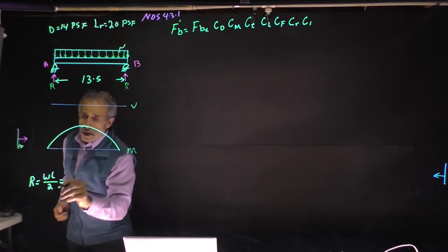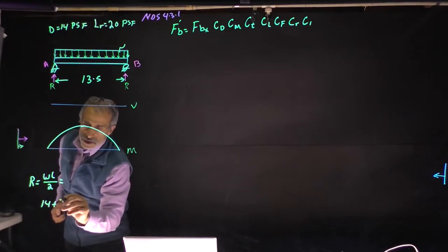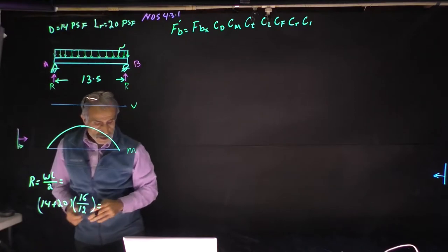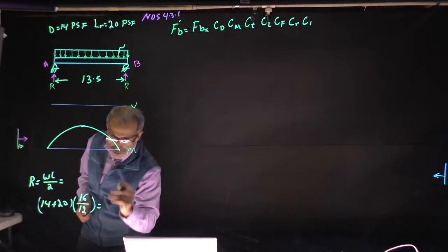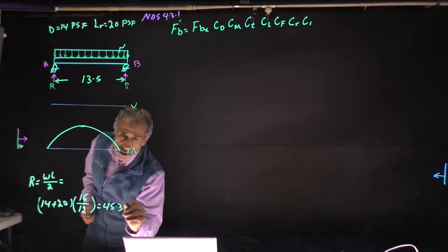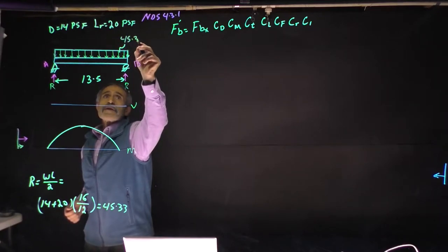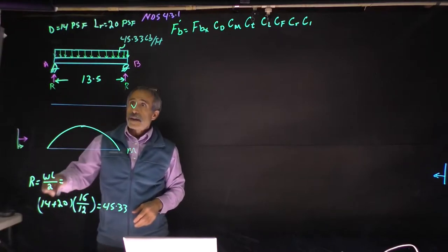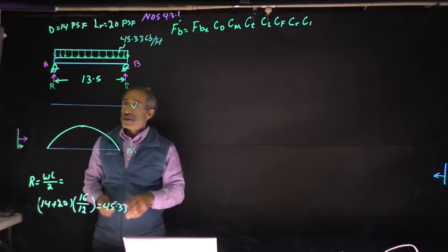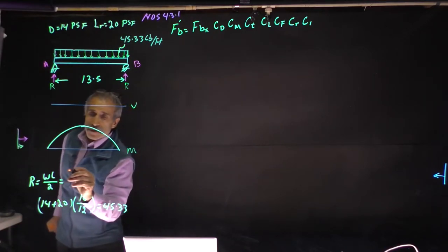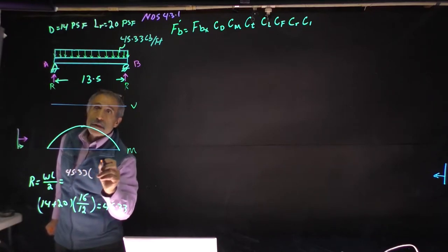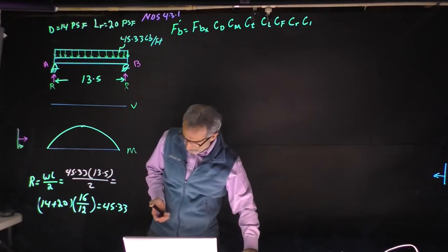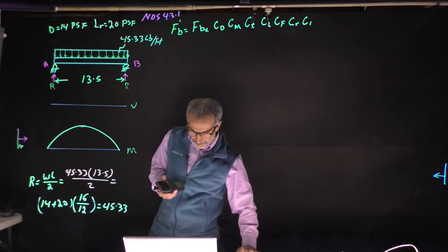If you want to know about tributary width, see one of my previous videos. We add 14 plus 20 and multiply by the tributary width of 16 inches divided by 12 to convert to feet, and that comes out to 45.33 pounds per foot. Now we calculate our reaction: R = WL/2 = 45.33 times 13.5 divided by 2, which comes out to 306 pounds.